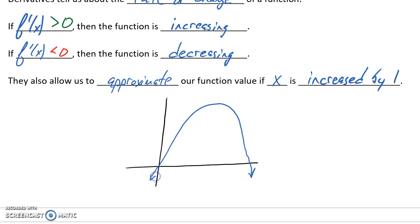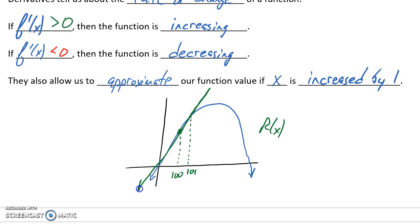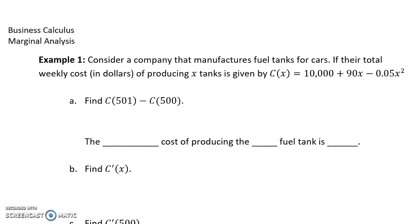Essentially, when we calculate the derivative at some point — say this is a revenue function and we're at a production level of 100 units — we would have some corresponding total revenue. What we want to do is understand, or come up with an approximation for, what would happen if we increased our production by one unit. We can make use of derivatives, since we've seen how we can find the derivative of a function at a given point to get the slope of a tangent line, and use that tangent line to approximate what our next function value would be if x is increased by one unit.